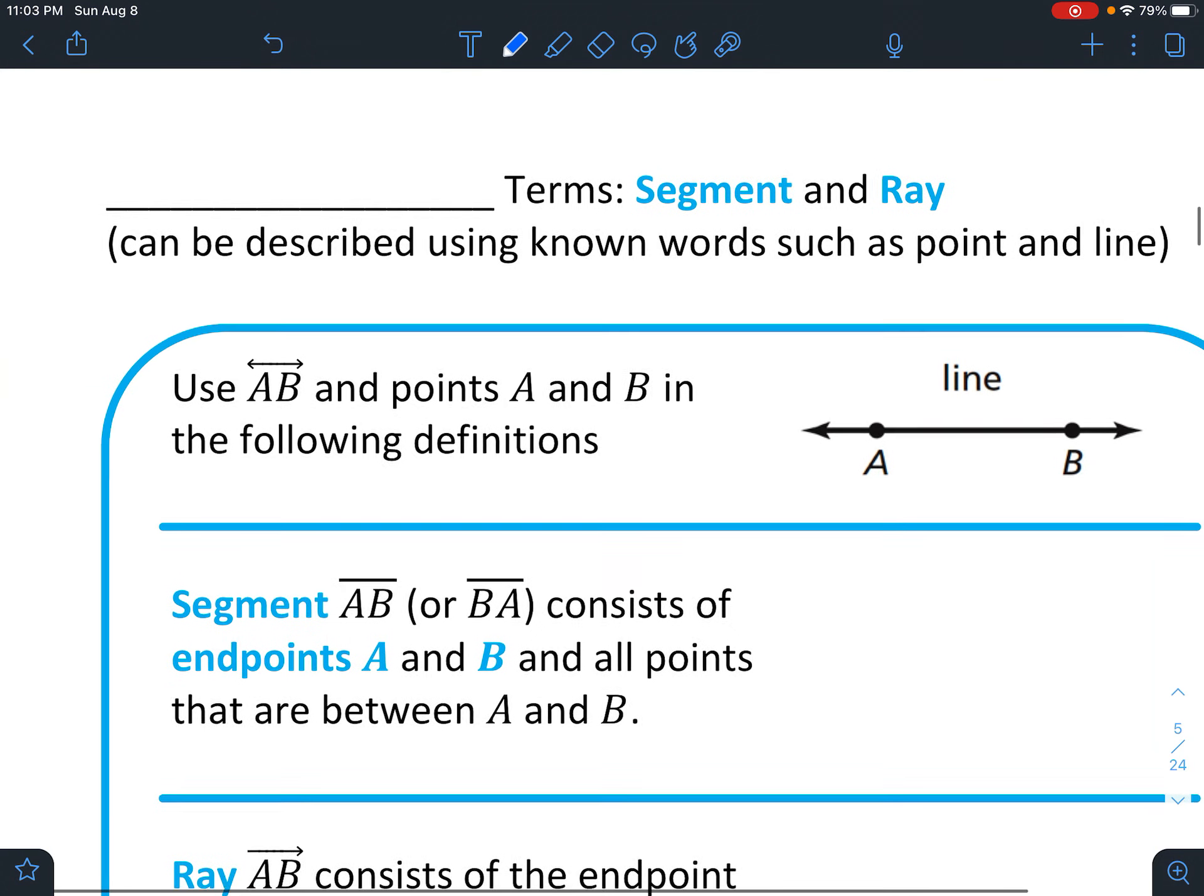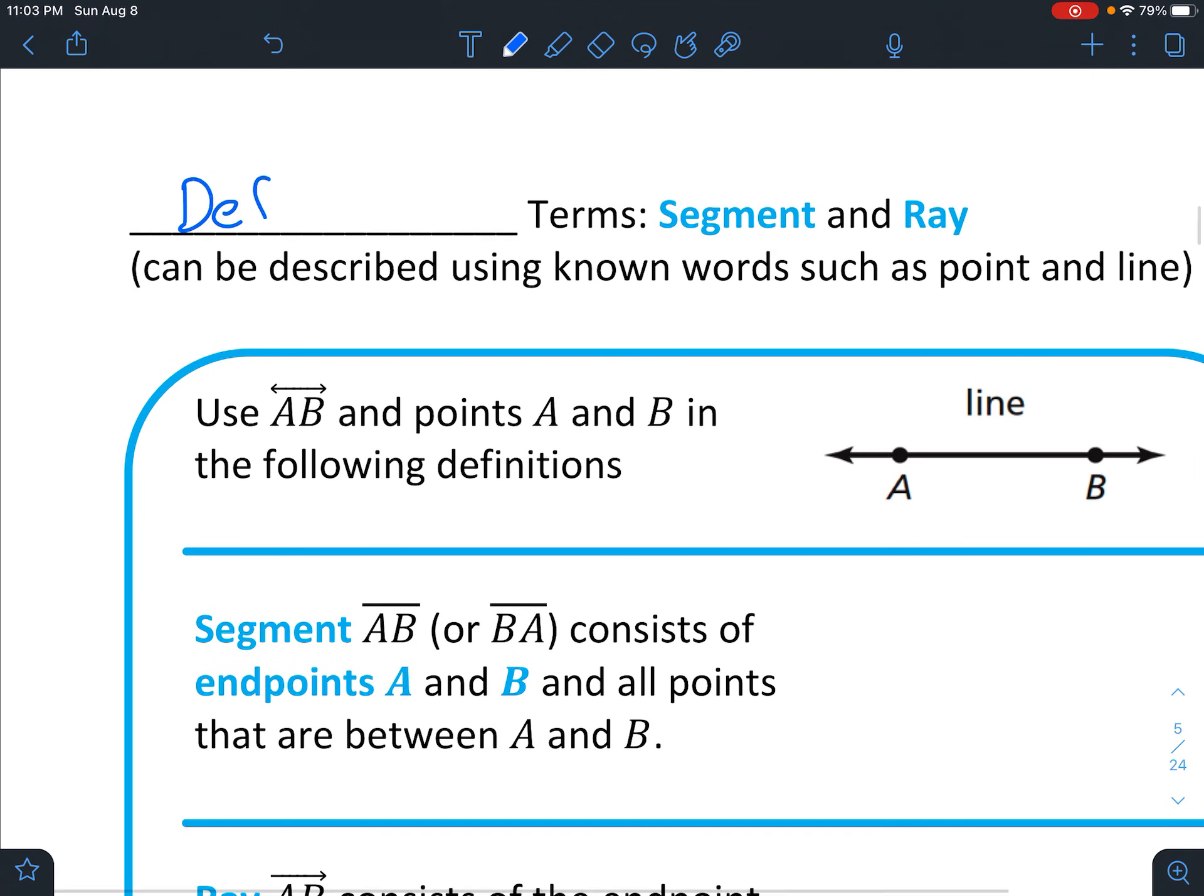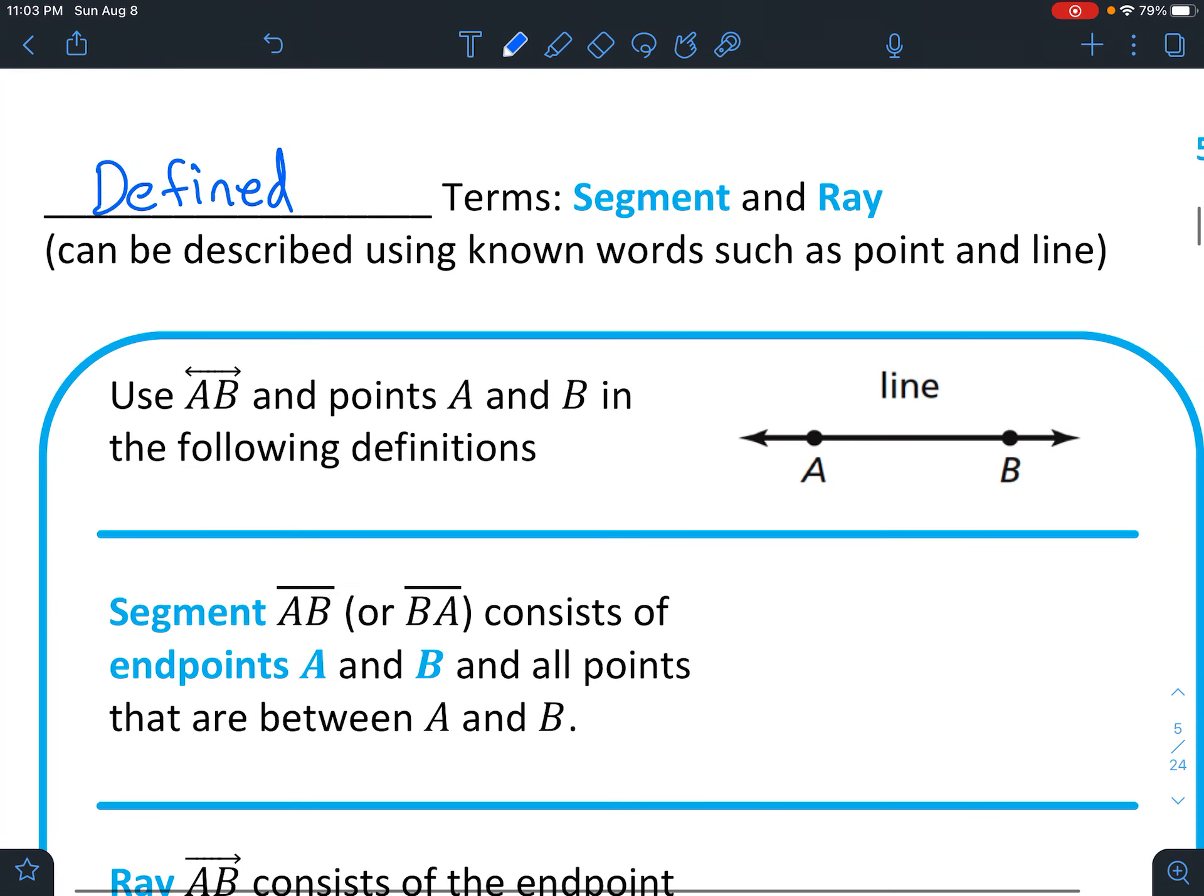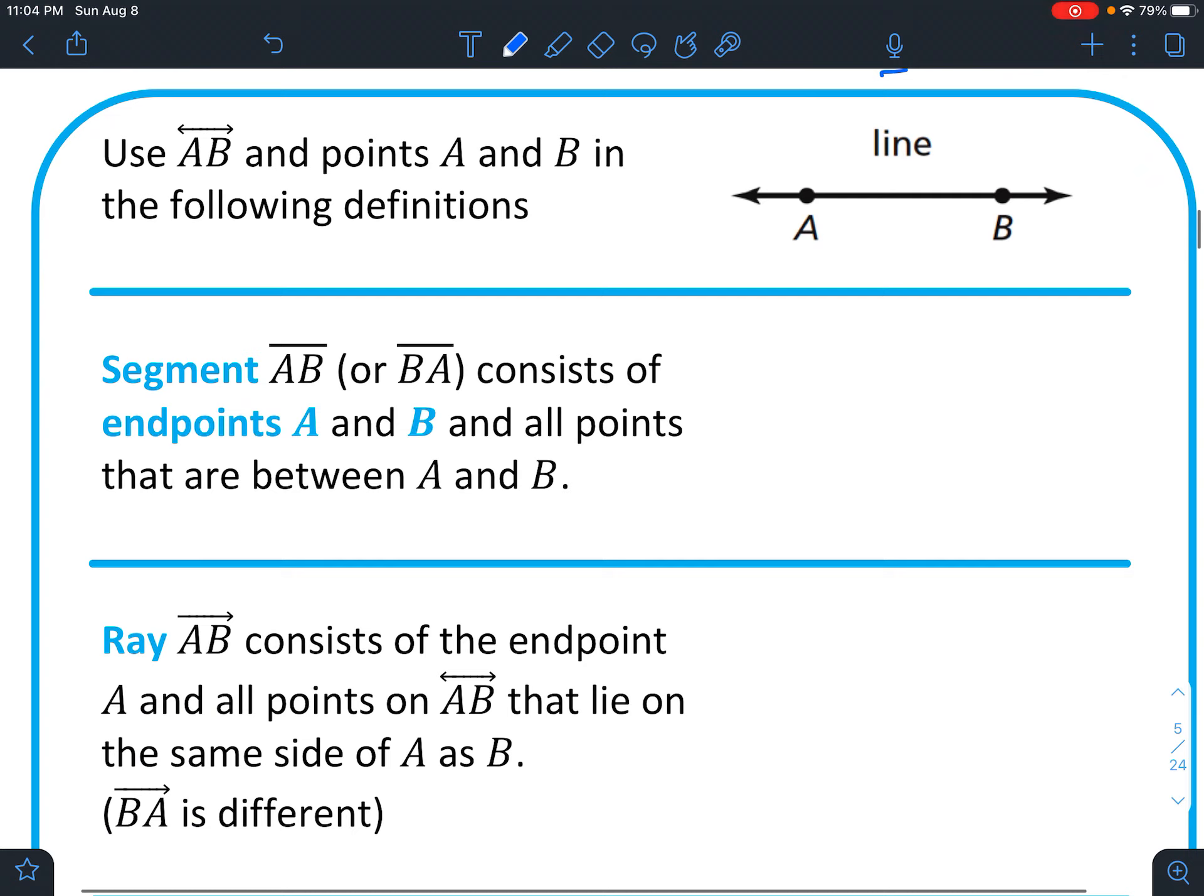Okay, on to the next. Now we're going to talk about some defined terms. So defined terms can be described using known words such as point and line. And so our first definition, it says use AB and points A and B in the following definitions. So we're going to use this as something we can refer to. Okay, and we're going to actually draw illustrations for the rest.